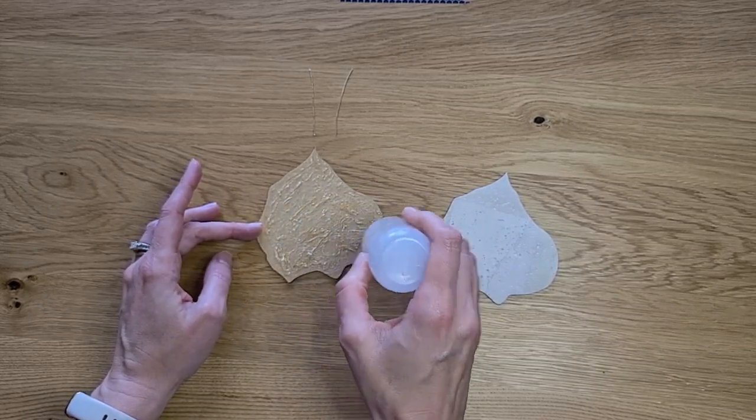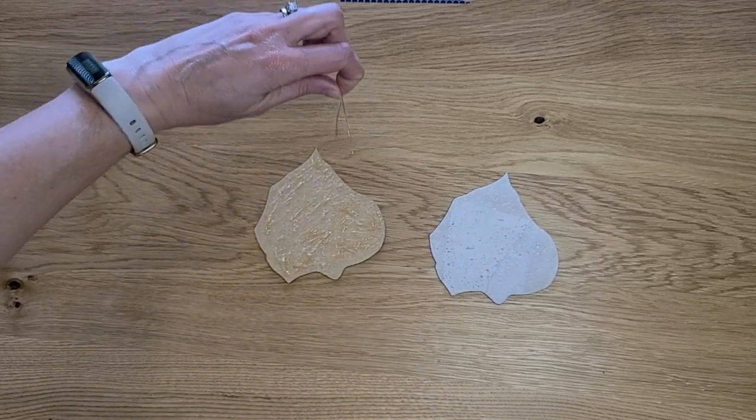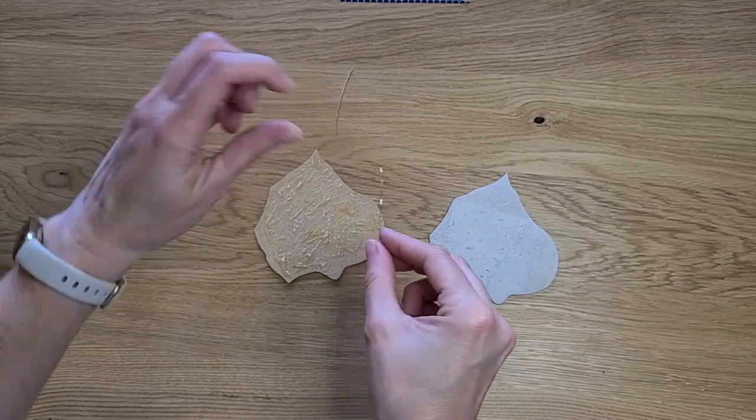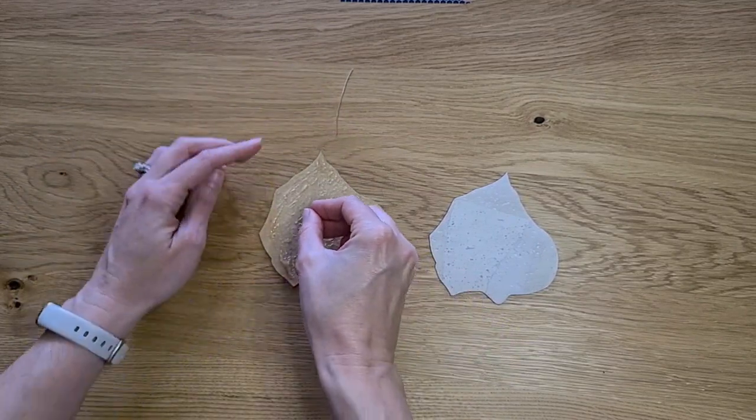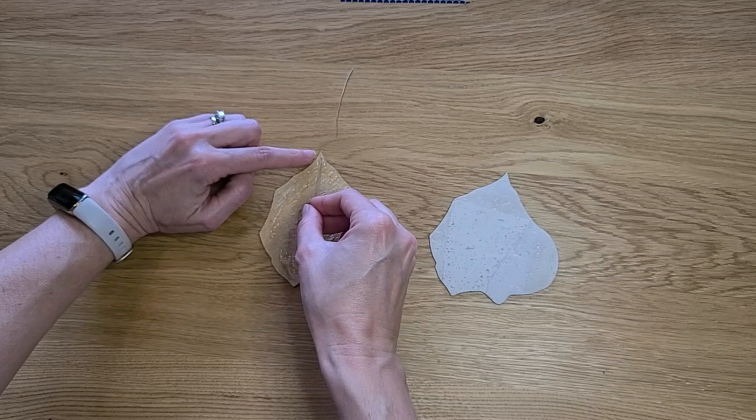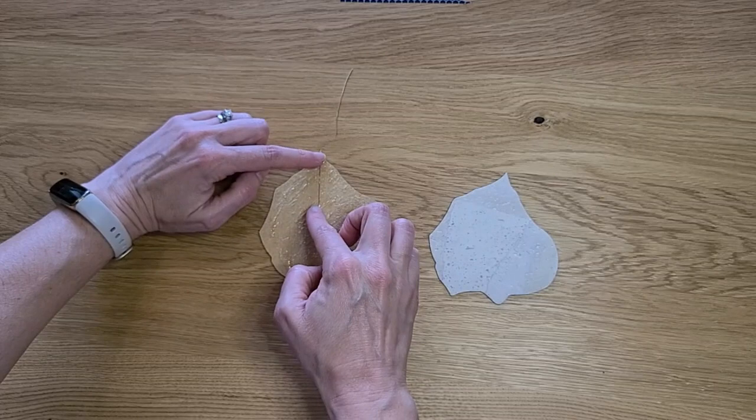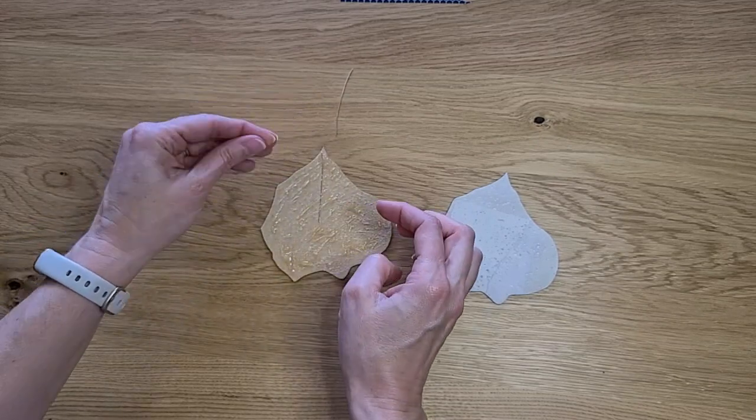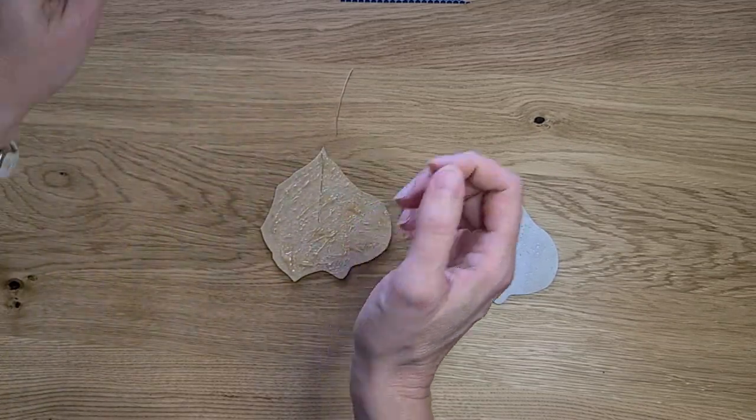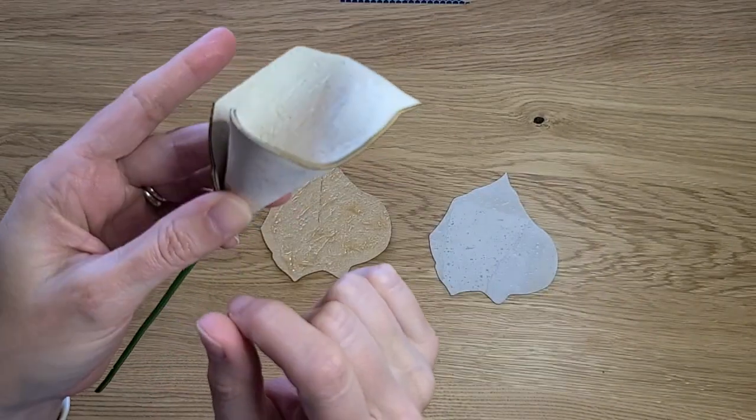Once you have that glue on there, you're going to take your small silver wire pieces and the first one you're going to lay right here at the tip going down. Just press that on there. This will allow you to add a little bit of definition to your calla lily.